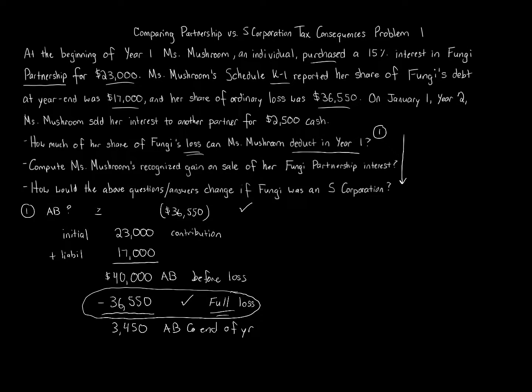And that brings the basis down to $3,450. So now let's go down to the next question, which is to compute Ms. Mushroom's recognized gain in the sale for Fungi Partnership Interest. Now this continues. This was year one, the information you just were told. Then it says, okay, next year, on January 1st, year two, Ms. Mushroom sold her interest to another partner for $2,500 cash. So now we're moving over to the second question. We're calling this number two. And this is also dealing with year two.